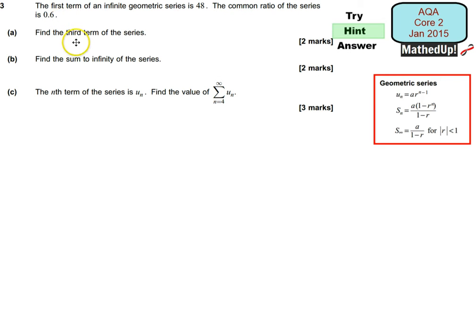For part A we need to find the third term of the series. This UN is telling me each term of my sequence or my series. A we know is my first term which in this case is 48. I know my common ratio R is 0.6 so I can plug this in and work out the third term. To find the sum to infinity of the series I can use this formula here. Again, I already know what A and R are so I should be able to work that out.